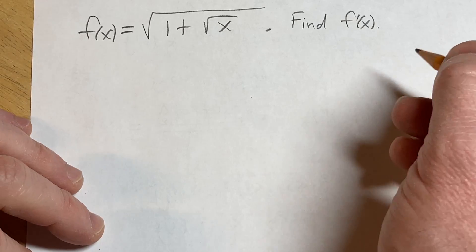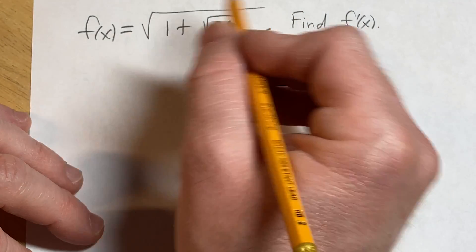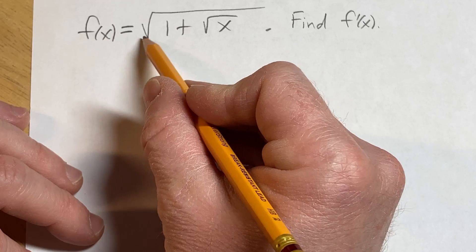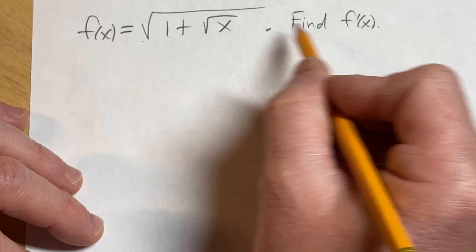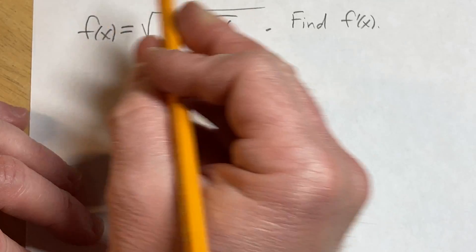Hi, in this video we're going to find a derivative. We have a square root inside a square root. So f of x is equal to the square root of 1 plus the square root of x. The question is to find f prime of x.